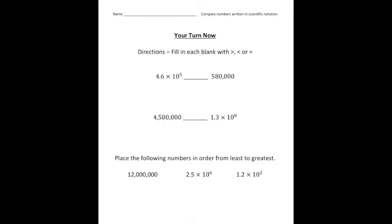Alright welcome back. Let's see how you did with these problems. The first one you had to compare 4.6 times 10 to the 5th to 580,000. I'm going to convert the first one into standard form — moving the decimal over 5 spots gives us 460,000. And 580,000 is greater than 460,000, so the inequality sign would go in this direction.